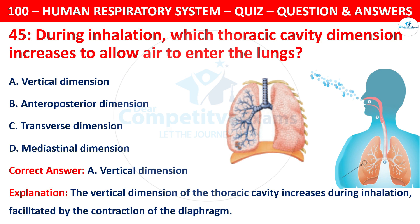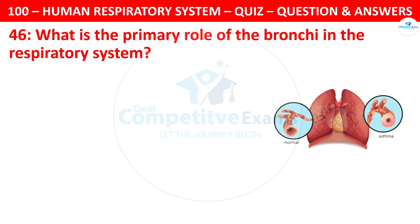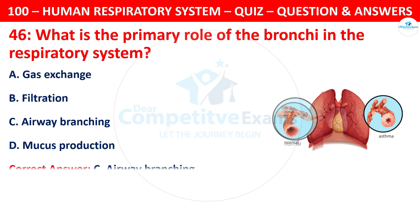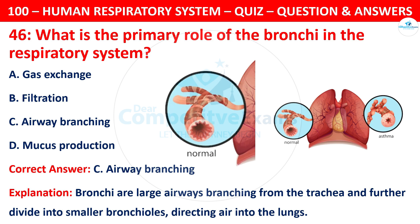Question 46: What is the primary role of the bronchi in the respiratory system? Your options are: gas exchange, filtration, airway branching, or mucus production. The correct answer is C — airway branching. The bronchi are large airways branching from the trachea that further divide into smaller bronchioles, directing air into the lungs.